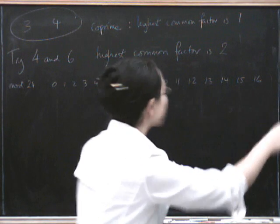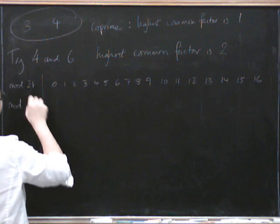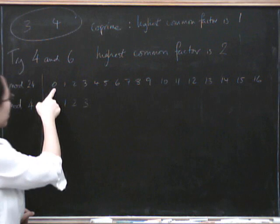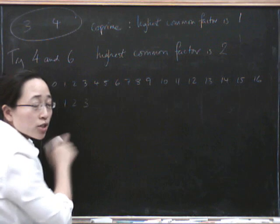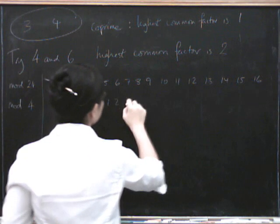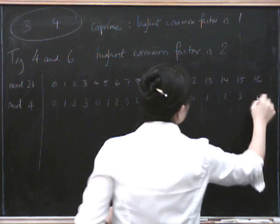So let's have a look at mod 4. We get 0, 1, 2, 3, because if you're 0 mod 24, that means you're divisible by 24, which surely means you're divisible by 4, right? 0, 1, 2, 3, 0, 1, 2, 3, 0, 1, 2, 3, 0.